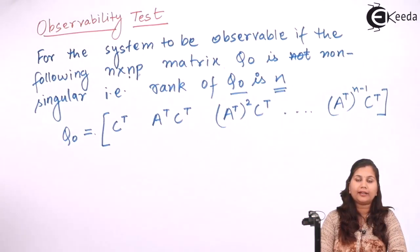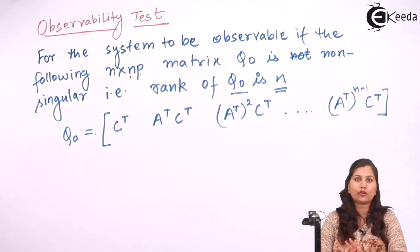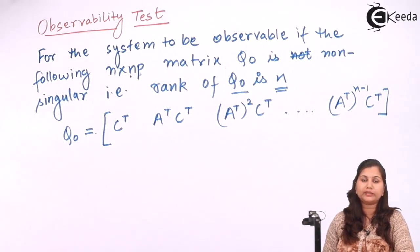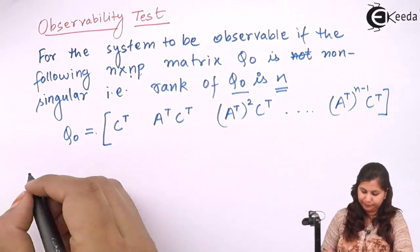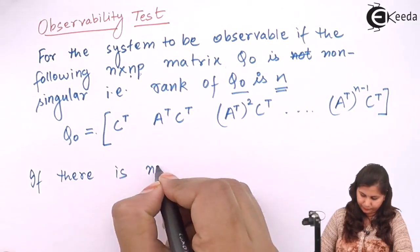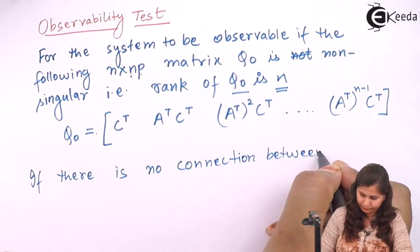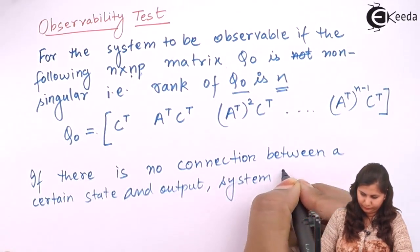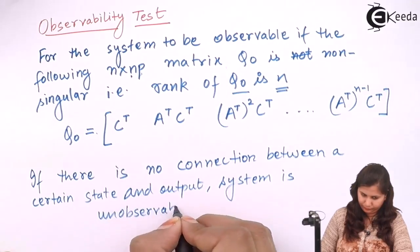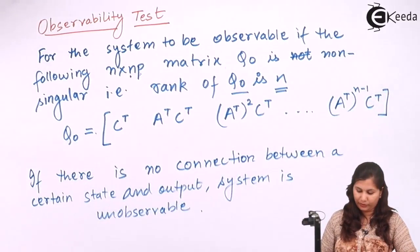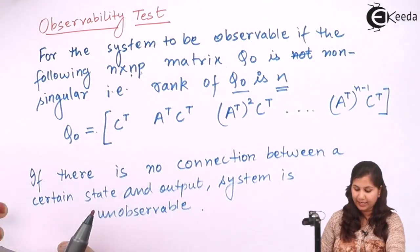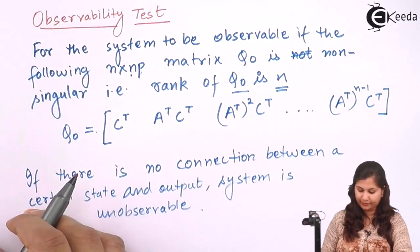If this Q₀ matrix is non-singular and its rank is N, then that system is said to be an observable system, meaning all the states of the system can be observed and measured externally. If there is no connection between a certain state and the output, then that system is said to be non-observable. Let's take an example to understand how this observability test is done.